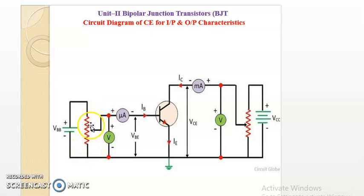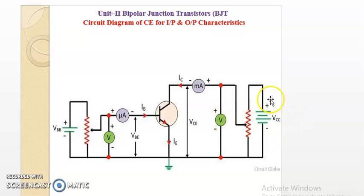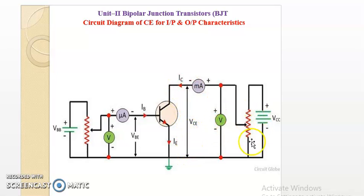Initially by keeping IB at zero microamperes, we measure the collector current by varying the potential difference VCE across the collector and emitter using the rheostat, and the collector current is recorded.